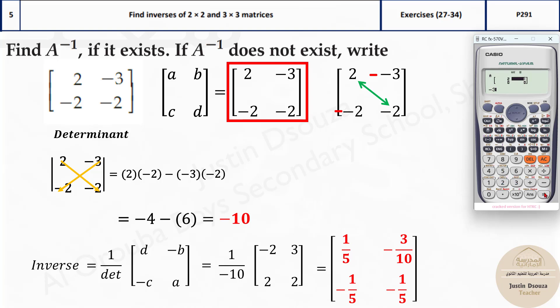2, minus 3, minus 2, and lastly, minus 2. That's it. Press AC. Shift 4. Matrix A is by 3.